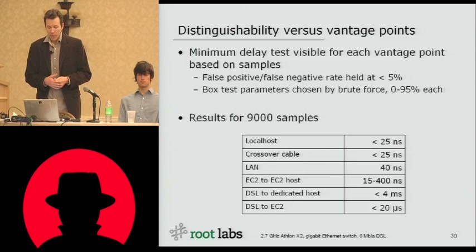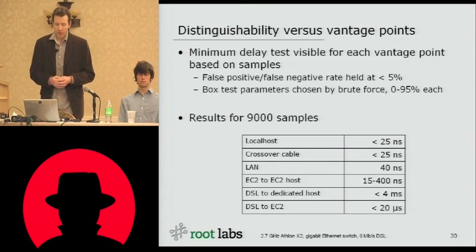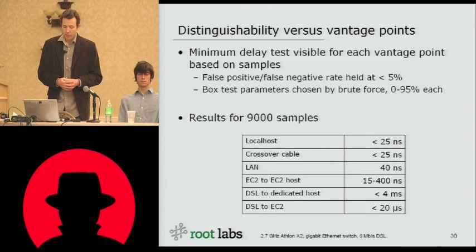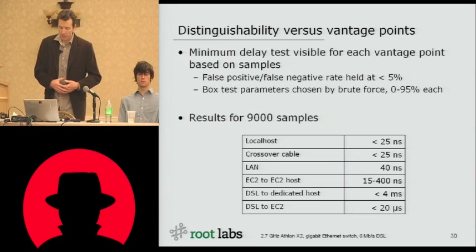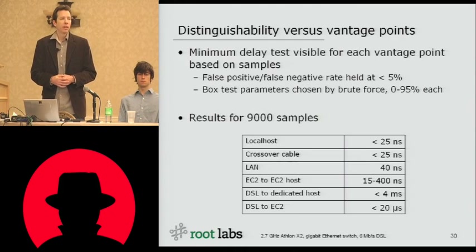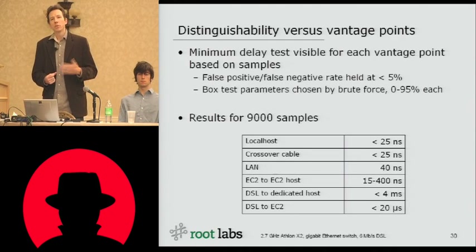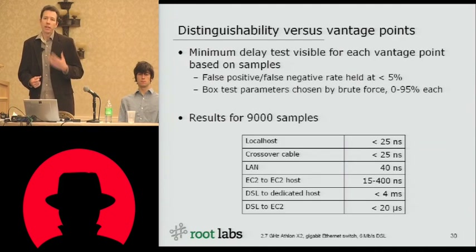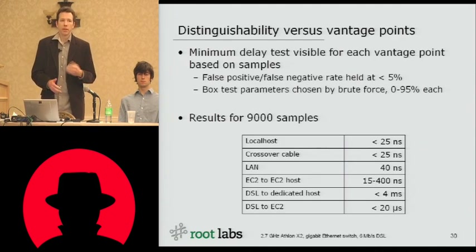For localhost and crossover cable, both were about less than 25 nanoseconds predictability. For LAN, it was about 40 nanoseconds. We ran many tests to confirm these were reliable. These are somewhat conservative estimates — we had some measurements that were about half or more of these values, but we rejected them because they weren't reliable. A lot of times we would be able to distinguish at the desired false positive and false negative rate, and other times we couldn't. Rather than report overly optimistic values, we reported conservative values.